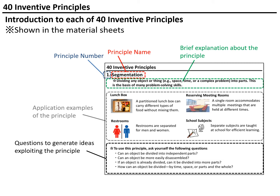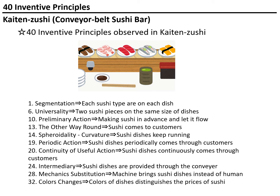I would like you to look through each of these principles and become familiar with what the 40 inventive principles are like. This example may provide a good opportunity to understand them. You should know what kaiten zushi is — in Japan there are many sushi bars which may be called conveyor belt sushi, where sushi runs on a belt conveyor in front of customers. We can see many of the 40 inventive principles in kaiten zushi.